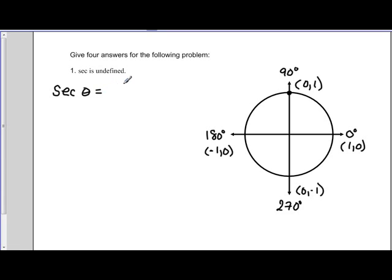Recall that secant of theta is the reciprocal of cosine. So if the secant of theta is undefined, then that means that the cosine of theta must be equal to zero.